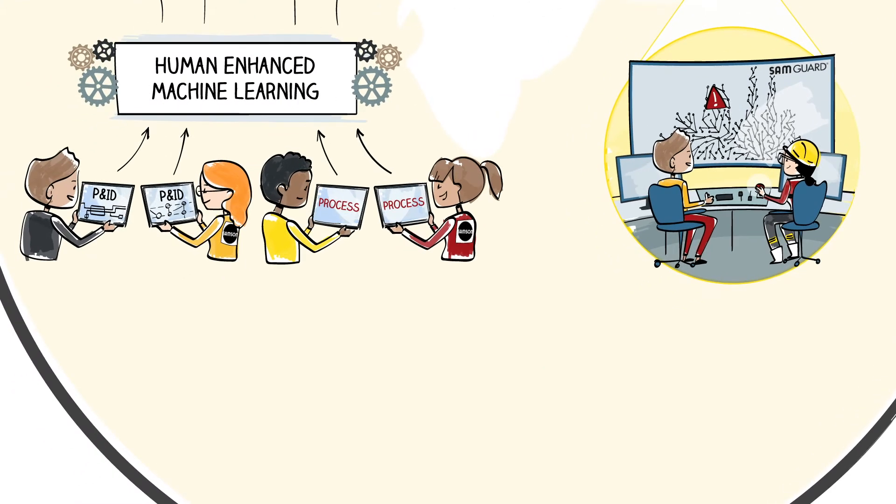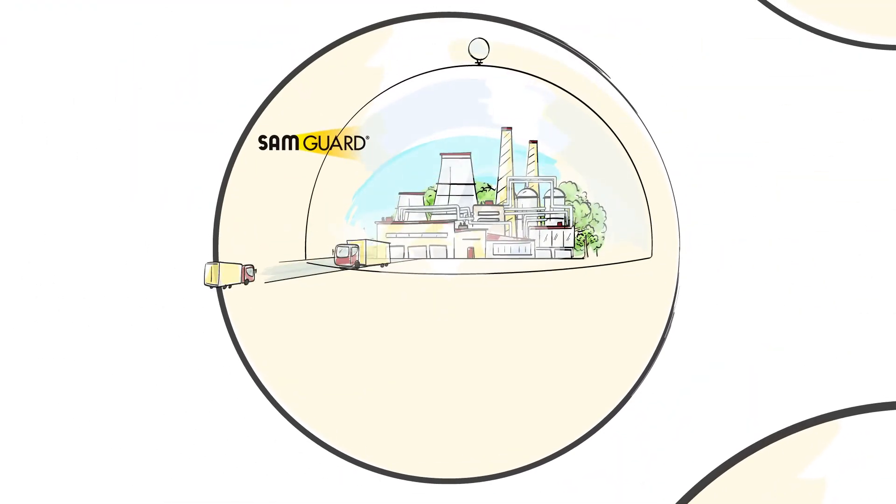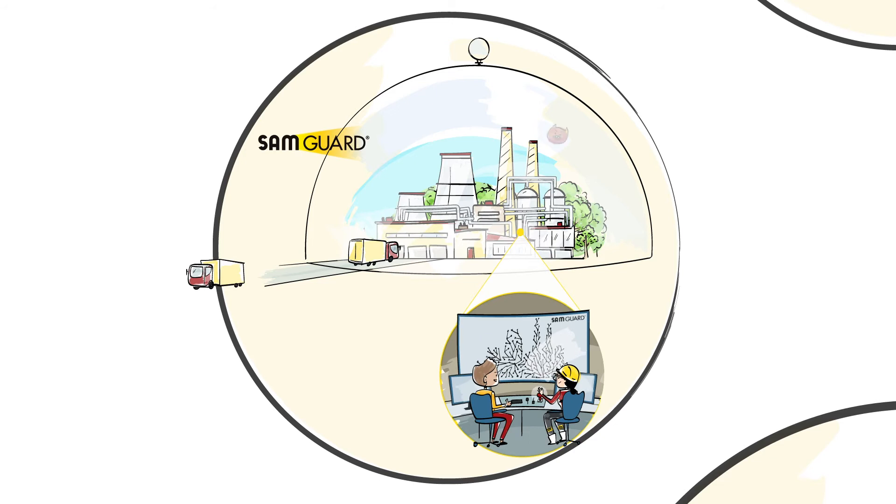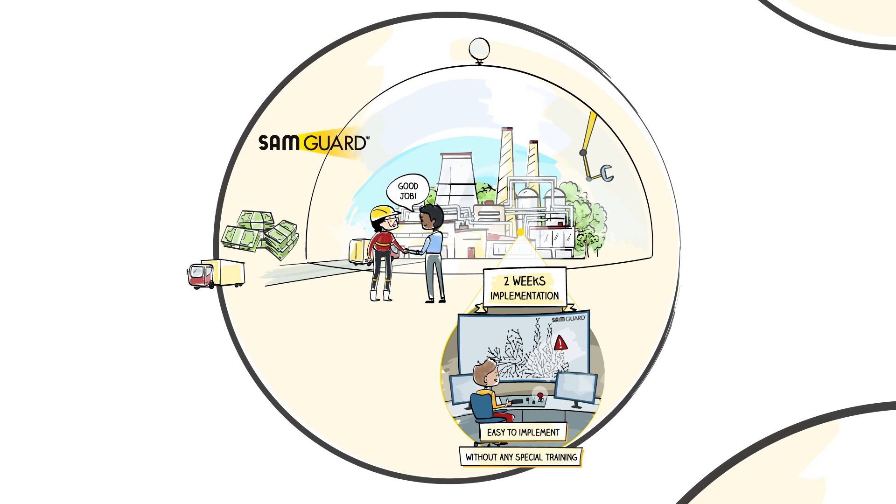These targeted early alerts allow Alex to act preemptively instead of constantly putting out fires. SamGuard is based on very advanced technology, making it very easy to implement and use without any special training. This powerful tool is up and running at your plant in only two weeks, analyzing your data and triggering actionable alerts so that you can respond in time.